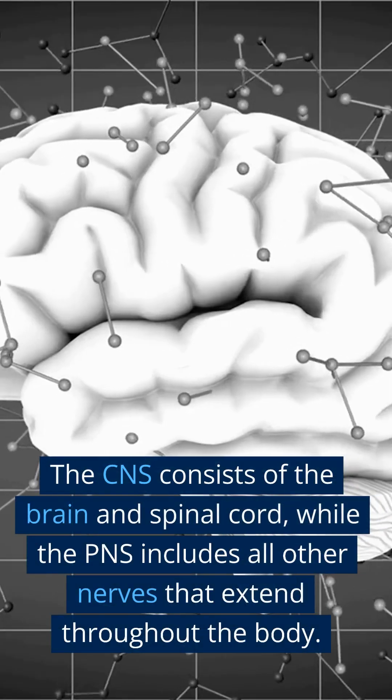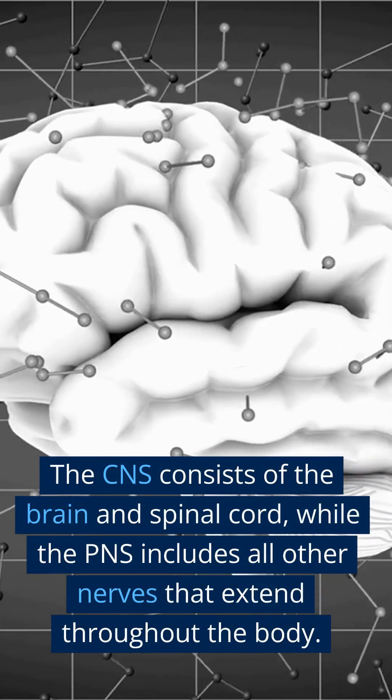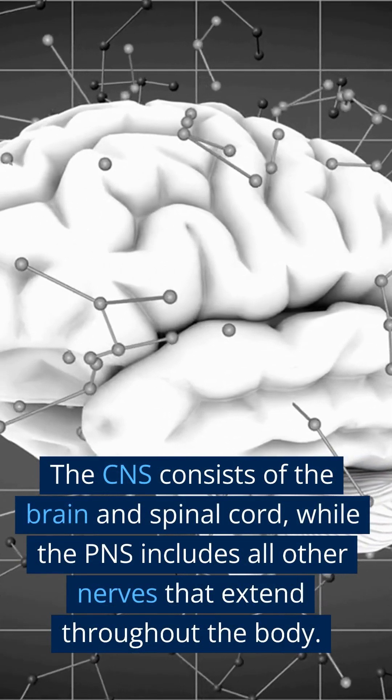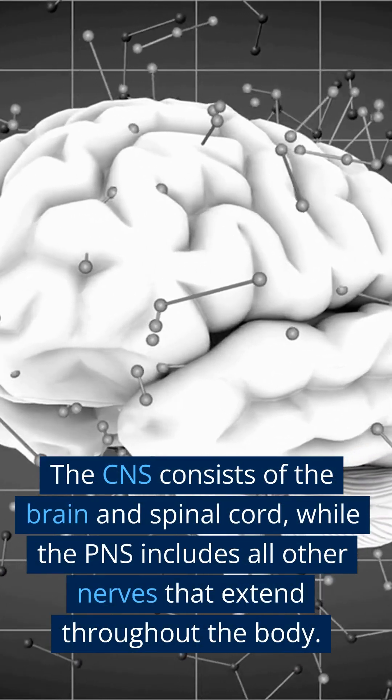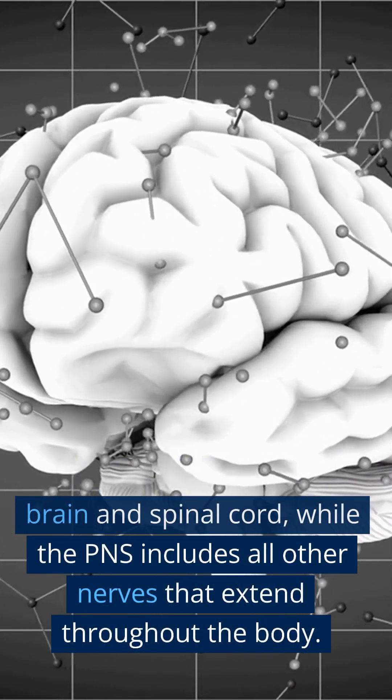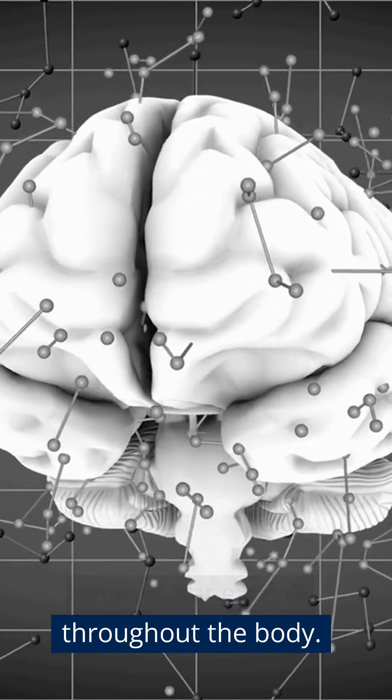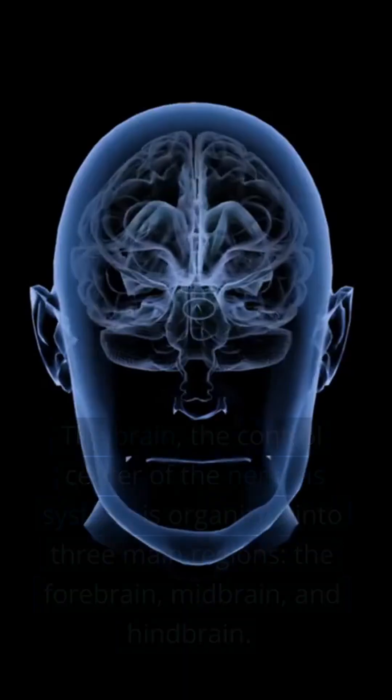The CNS consists of the brain and spinal cord, while the PNS includes all other nerves that extend throughout the body.